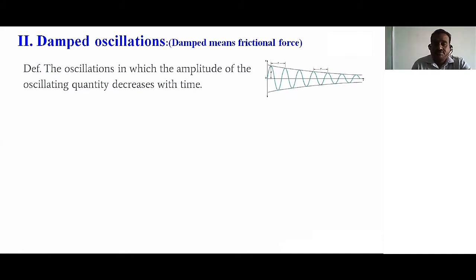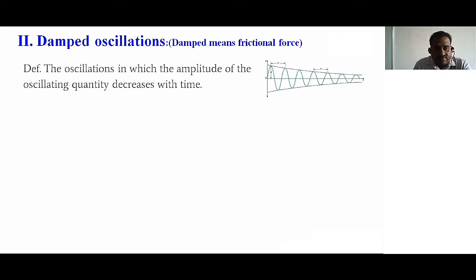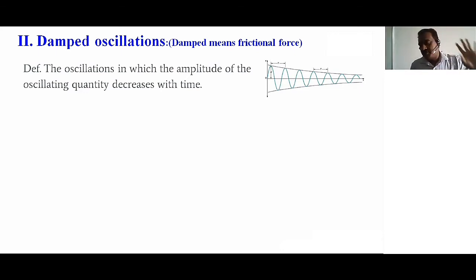Don't confuse — it is amplitude, not acceleration. The oscillations in which the amplitude or displacement of the oscillating body decreases as the time value increases, due to the frictional resistance phenomenon, are called damped oscillations. Simply: time increases, amplitude value decreases — this phenomenon is called damped oscillations, and this decrease is due to frictional force or damped frictional resistance.